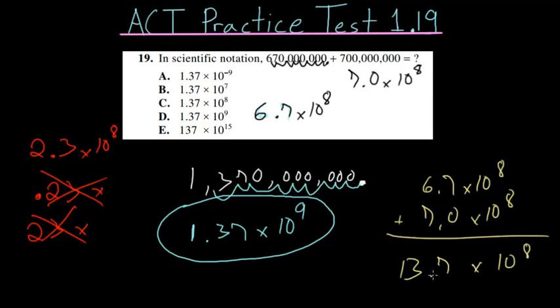Now, since the decimal's in the wrong spot, we'll have to move it once to the left. So it becomes 1.37. But when we do that, since we're moving the decimal to the left, we have to increase our exponent. So we're at 10 to the ninth. And you can see that this is the same answer that we found before, so we know for sure that choice letter D here is the right answer.